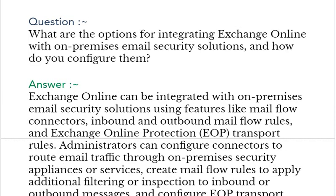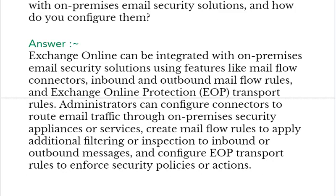Our next interview question is: what are the options for integrating Exchange Online with on-premises email security solutions and how do you configure them? Your answer should be: Exchange Online can be integrated with on-premises email security solutions using features like mail flow connectors, inbound and outbound mail flow rules, and Exchange Online Protection (EOP) transport rules. Administrators can configure connectors to route email traffic through on-premises security appliances or services, create mail flow rules to apply additional filtering or inspection to inbound or outbound messages, and configure EOP transport rules to enforce security policies or actions.